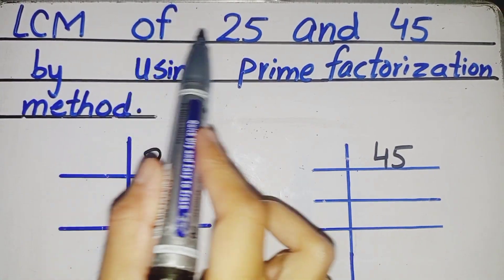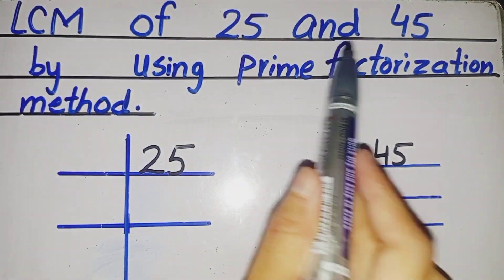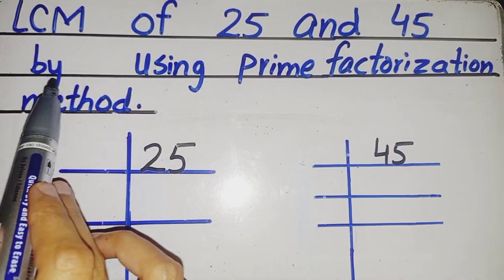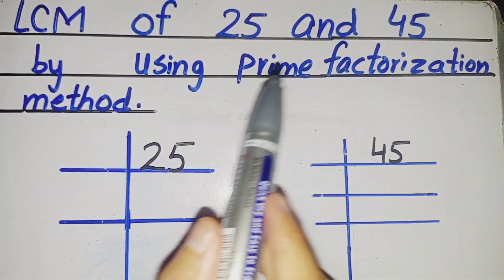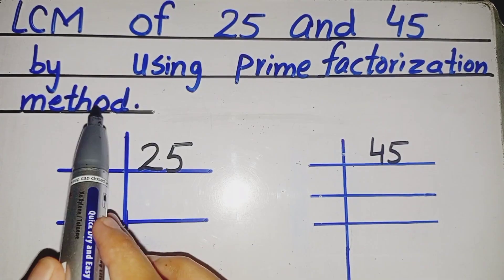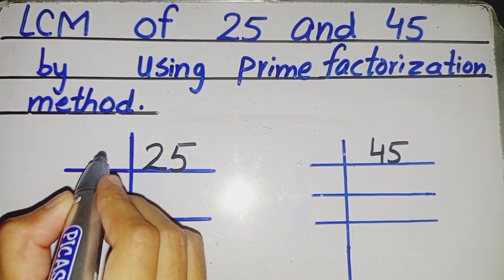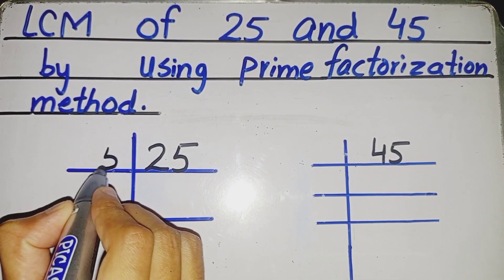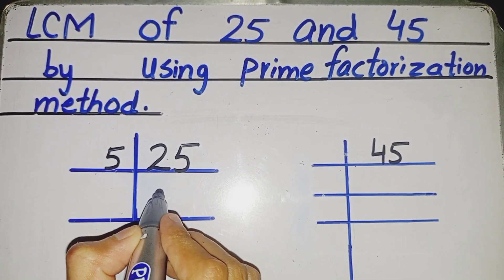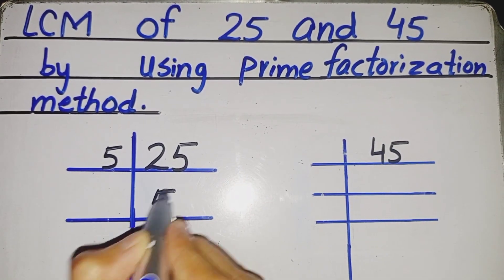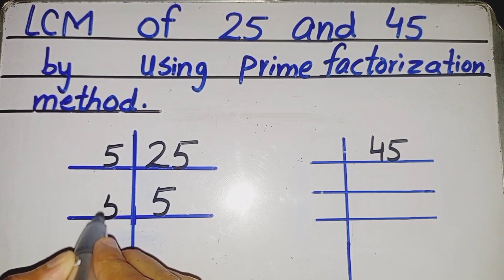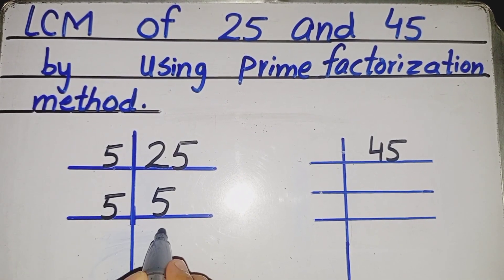LCM of 25 and 45 by using the prime factorization method. For 25: 5 fives are 25, 5 ones are 5.